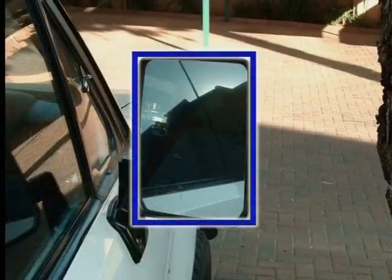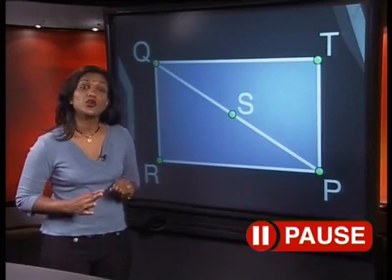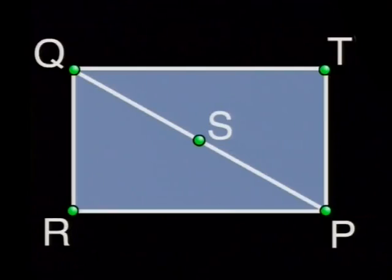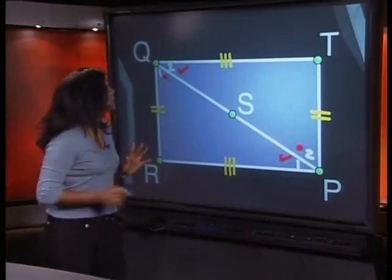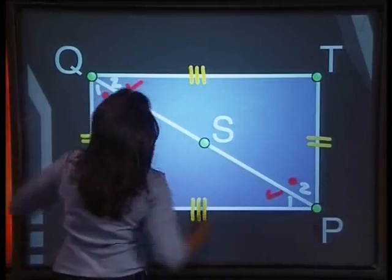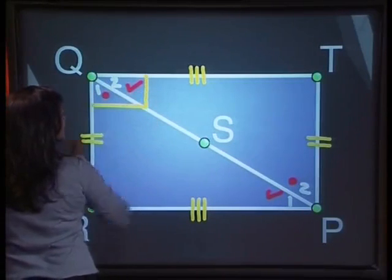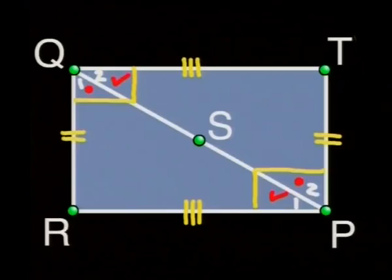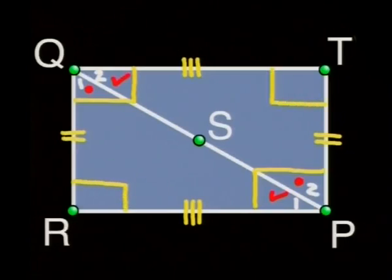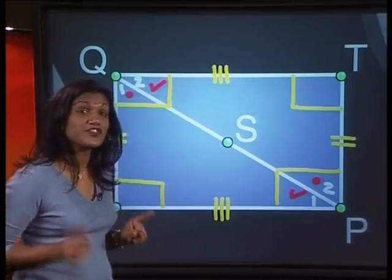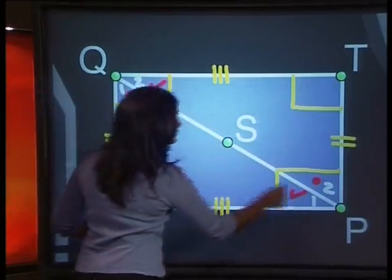Rectangles can be found in many places around us — can you see any in the classroom? How about your books? Now let's explore the properties of the rectangle, starting with the lengths of the sides. QT is equal to RP and QR is equal to TP — in other words, the two pairs of opposite sides are equal. We also discovered that all four angles — at Q, P, R and T — are each 90 degrees. So the next property of the rectangle is that all four angles are equal to 90 degrees.